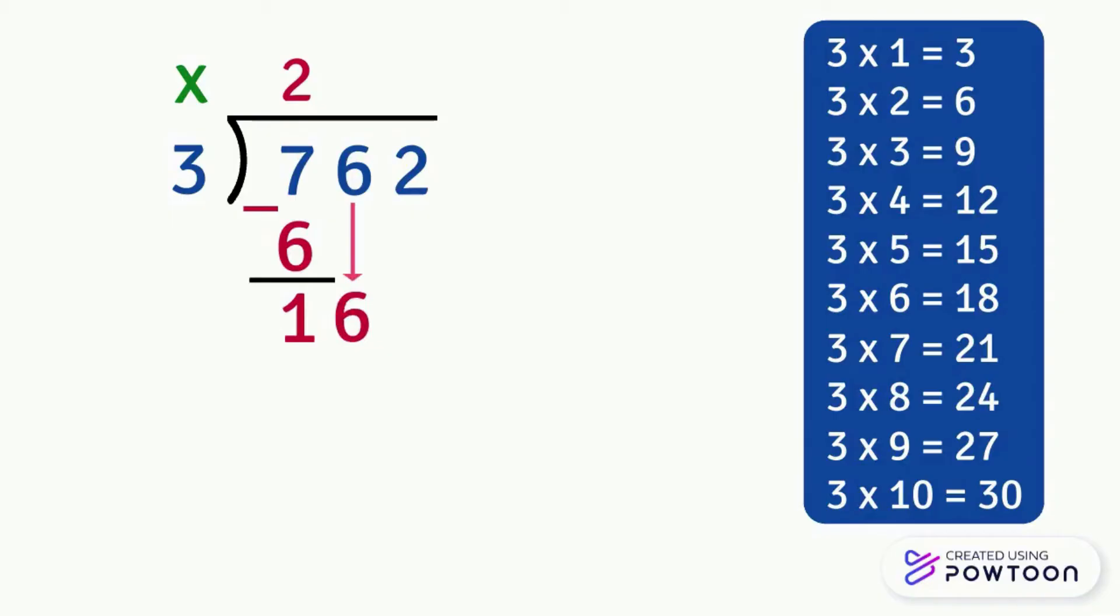We want to divide 16 by 3, then we ask the question 3 times what gives us 16 or a number very close to 16? If it's difficult, then we can help ourselves by using the table of 3. In the table of 3 we have 3 times 5 equals 15 and 3 times 6 equals 18, but the number 18 is greater than 16, so we have to take 3 times 5.